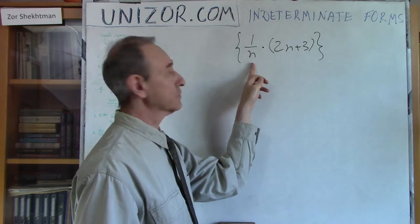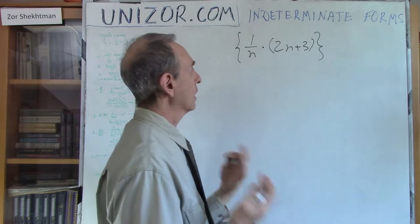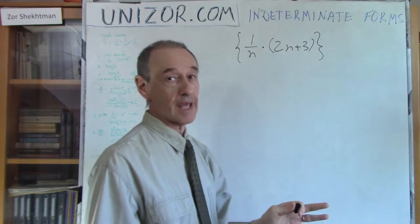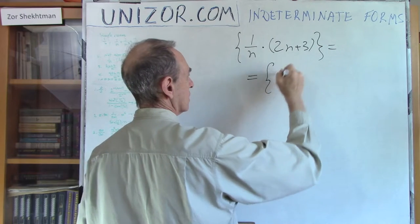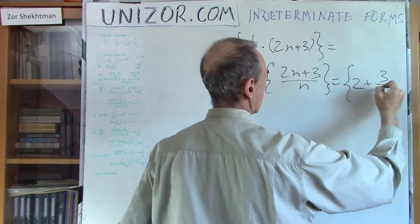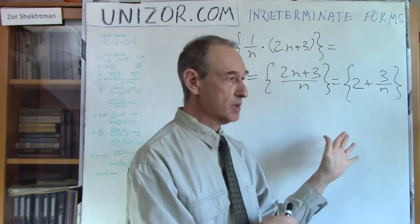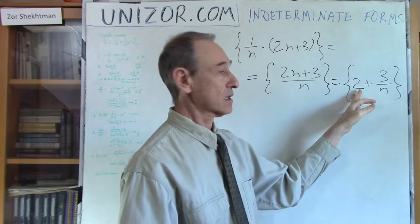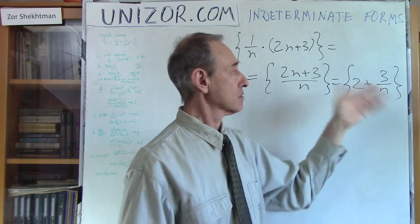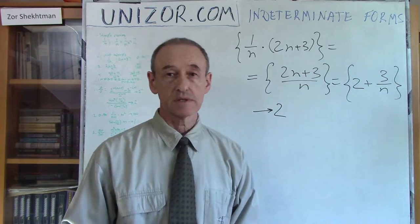In each case I will explain, as an example, what can be done about this particular case to resolve the limit. There is no general approach for any case, but we will discover certain commonalities. The first not-so-simple limit I would like to take is the following: a sequence which is a product of an infinitesimal and something infinitely growing — one thing decreasing as n goes to infinity and another increasing. This is 2n+3 divided by n, which equals 2 plus 3 over n.